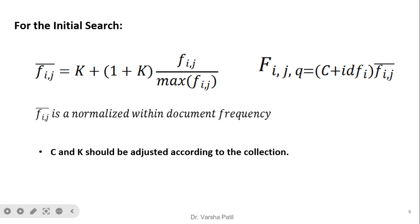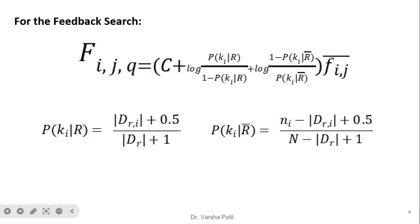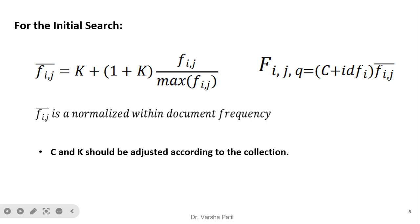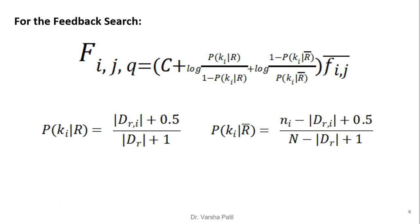The normalized term frequency f'(ij) ranges from 0 to 1 for a document. To this we add the term (k+1) / (f'(ij) + k), computing f'(ij). After calculating f'(ij), we multiply by the inverse document frequency (IDF), where IDF is adjusted by adding the constant c, giving (c + IDF). For the feedback search — once documents are retrieved and the user clicks on some (making them relevant) and ignores others (making them irrelevant) — the formula for f_ijq is modified using the concept of conditional probability and log of odds from the probabilistic model.